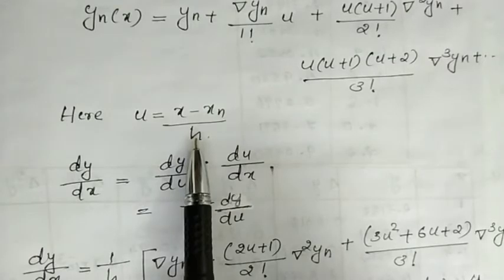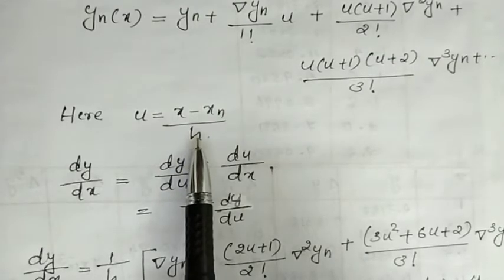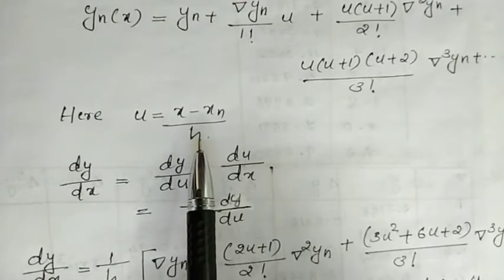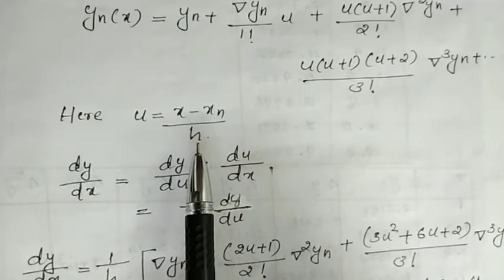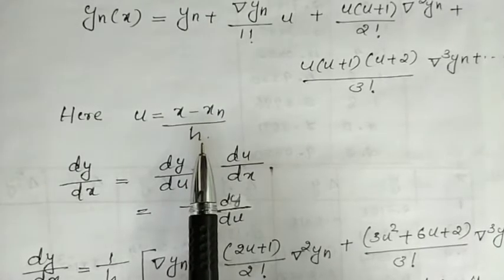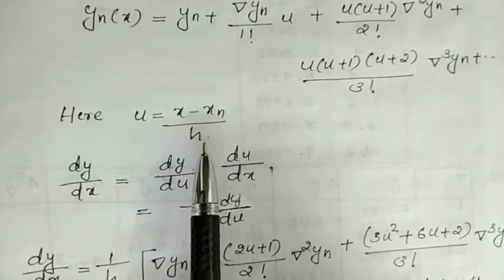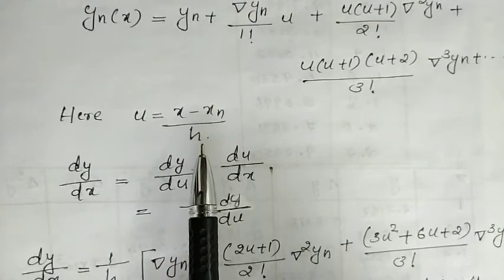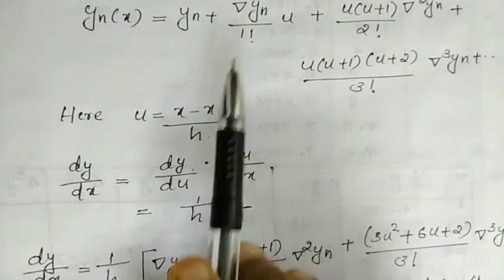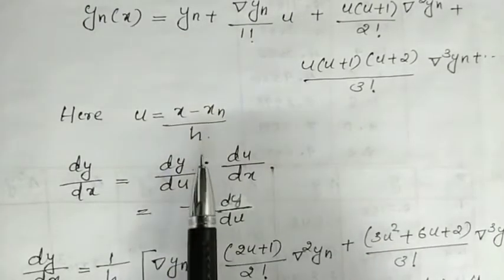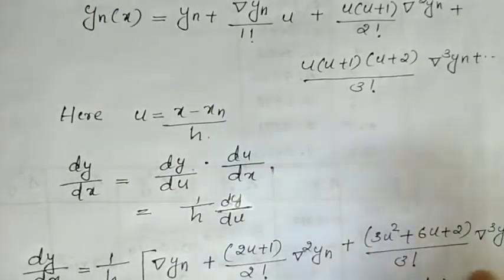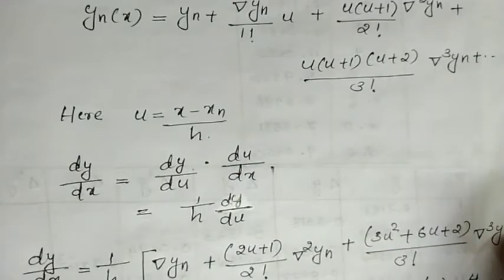Normally, we use Newton's backward interpolation formula when the question asks for the derivative at the last portion of the table — that is, when x corresponds to a value at the end of the data.